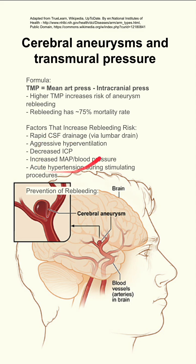These things that increase your re-bleeding risk either increase your mean arterial pressure or decrease your intracranial pressure, thus increasing your transmural pressure.